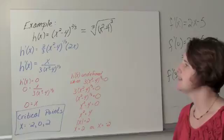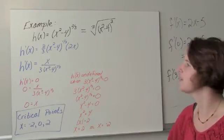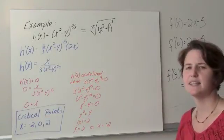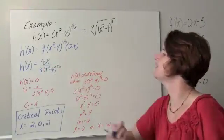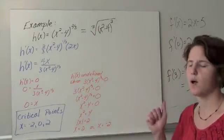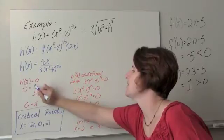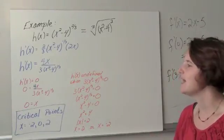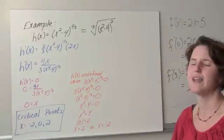h prime of x is power rule with the chain rule. 2/3 (x squared minus 4) to the negative 1/3 times the derivative of x squared minus 4, which is 2x. When I simplify this, canceling like factors, h prime of x equals 4x divided by 3 times (x squared minus 4) to the 1/3 power. When does h prime of x equal 0? Well that means I have 0 equals 4x divided by 3 times (x squared minus 4) to the 1/3 power. A fraction only equals 0 if the numerator is 0, and that happens only when x is 0.